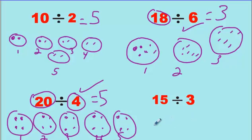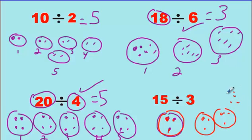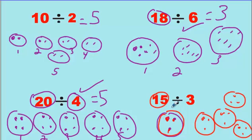Fifteen divided by three — I'll do the same approach. Here's a team of three, their group. Another team of three. A team of three. A team of three. I've got three, six, nine, twelve, and three more makes fifteen — I stop there. That's all I'm allowed; fifteen all together divided by three. I have one team, two, three, four, five teams. That's my answer — five.